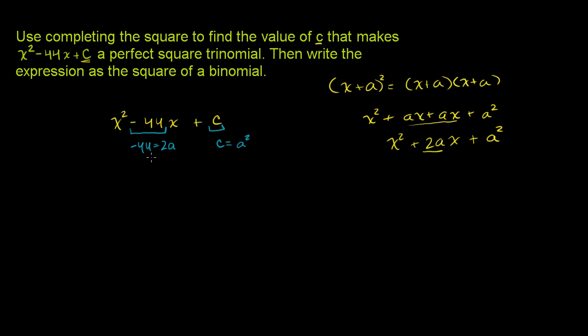So what's a? Well, if we know -44 is 2a, we can divide both sides by 2. And we know that -22 has got to equal a, a has got to equal -22. a is half of the coefficient right here, it's half of -44.